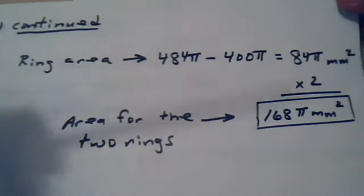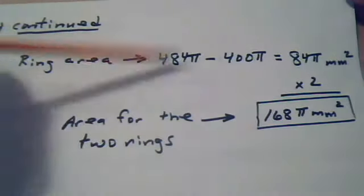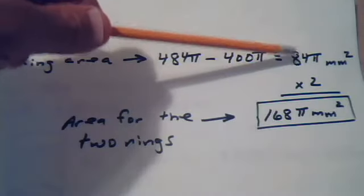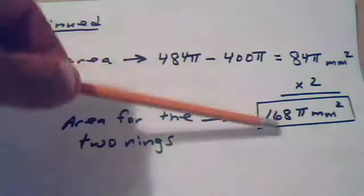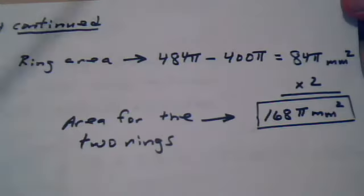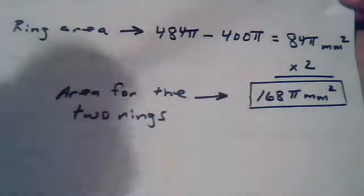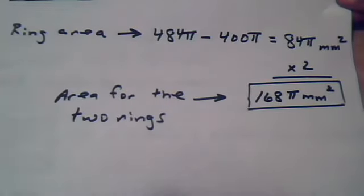So the ring area is this subtraction. That would give you one ring. But since there are two rings, one on the top and one on the bottom, multiply times two, and this would be the total ring area, 168π square millimeters.